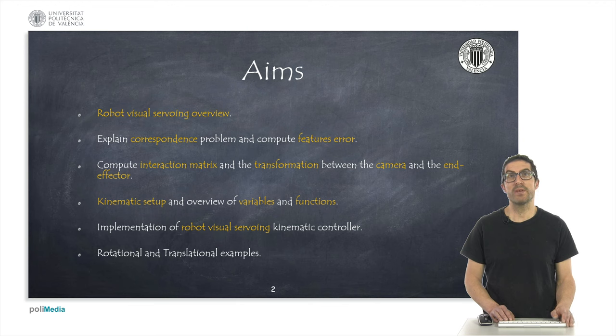First, I will review the conceptual framework of robot visual servoing using a control diagram. Later, I will explain how to obtain features and make correspondence with those obtained with the reference image, in order to compute an error to be minimized.